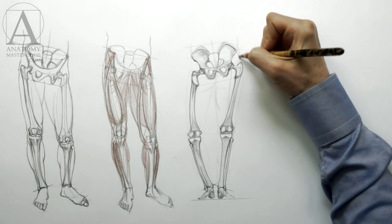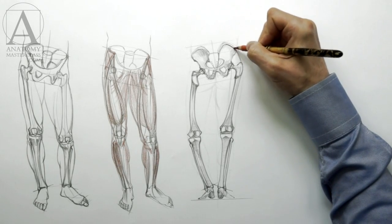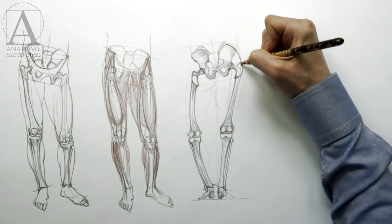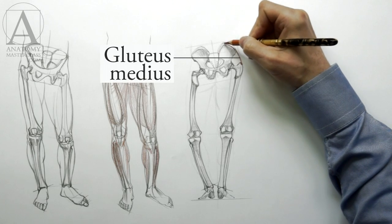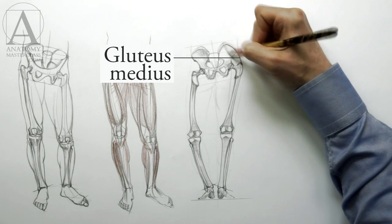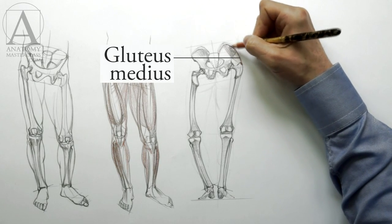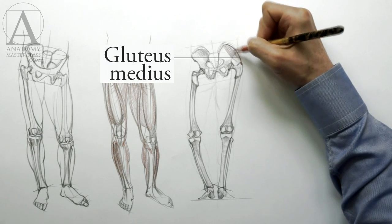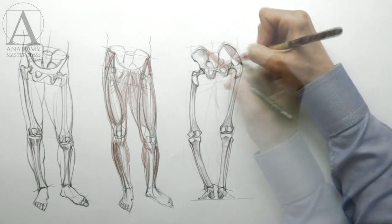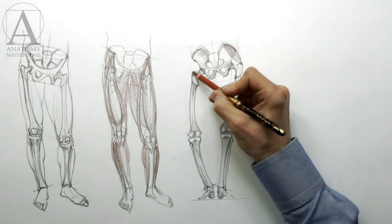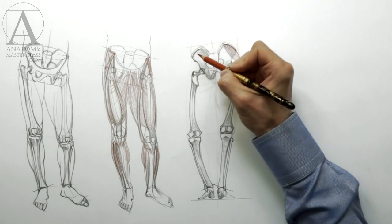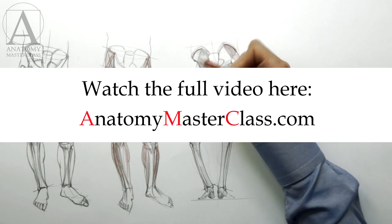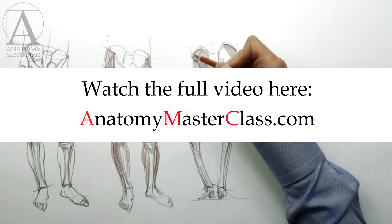I will draw the muscles with red pencil. The gluteus medius muscle originates from the outer surface of the ilium bone of the pelvis and inserts into the top projection of the thigh bone. This muscle helps move the upper leg away from the body and sideways.